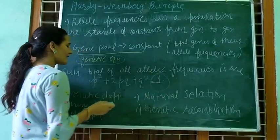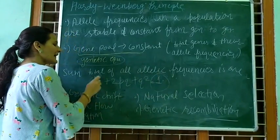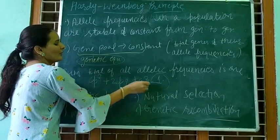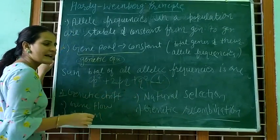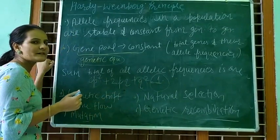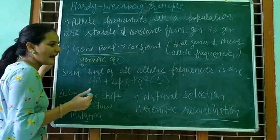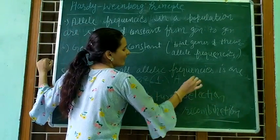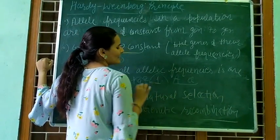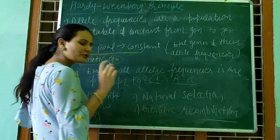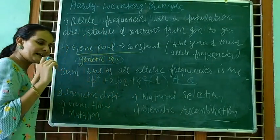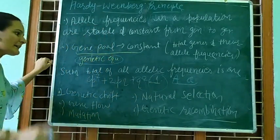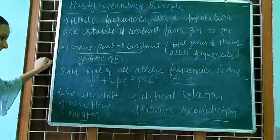The total allele frequency equals 1. The equation is: p² + 2pq + q² = 1. The frequency of alleles — capital A and small a — must sum to 1. Allele A and allele a together represent the total allelic frequency.